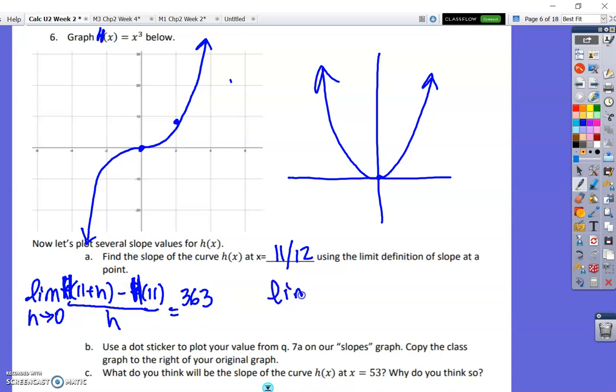And then the limit as h approaches 0 of capital H of 12 plus h minus H of 12 over h.